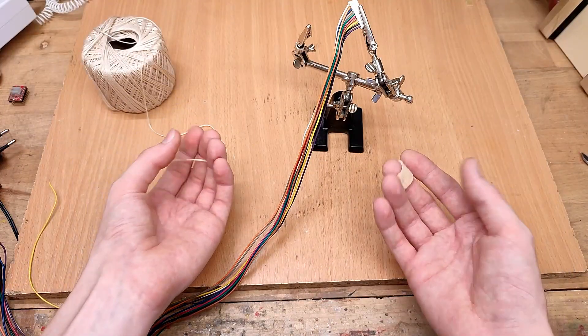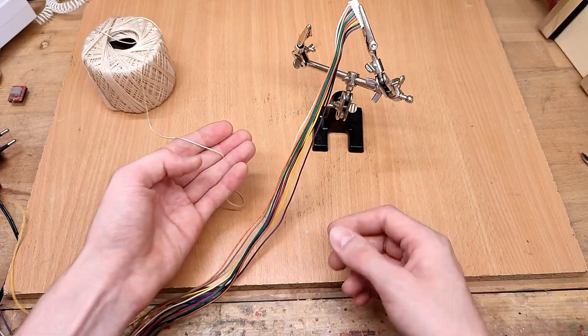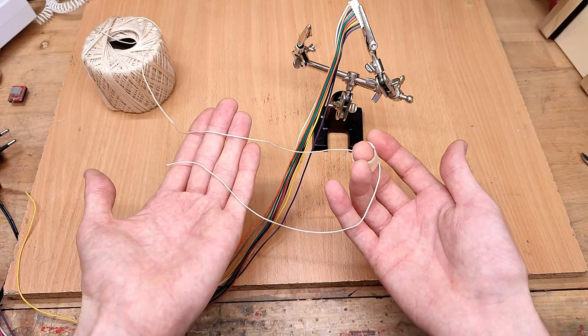Okay, for a simple spot tie, which is basically the equivalent of a single zip tie, you take your string and create a loop like this.